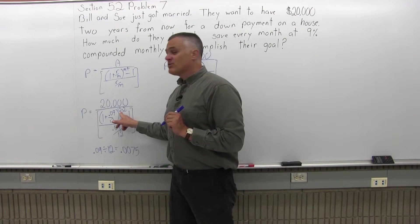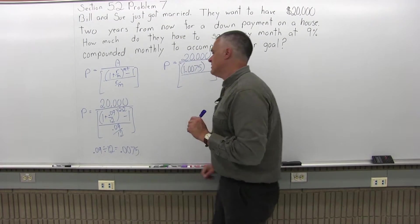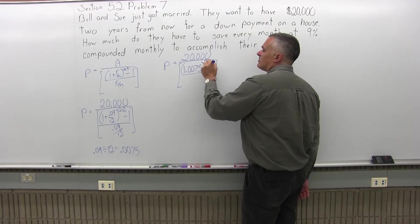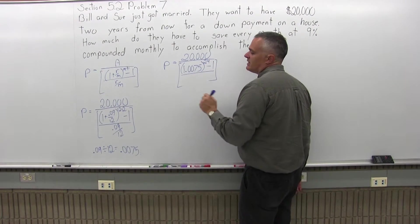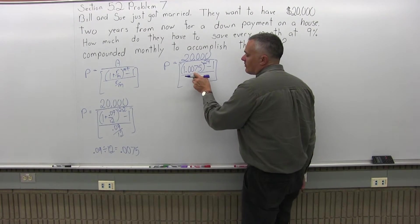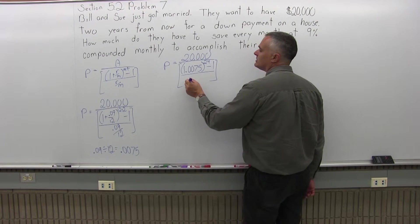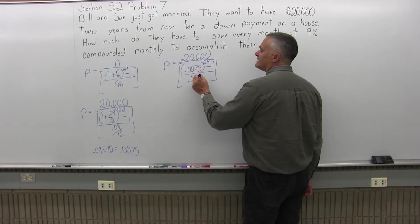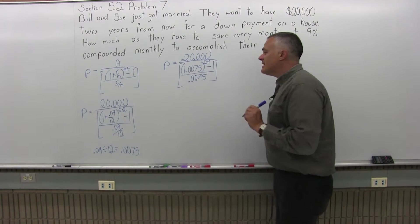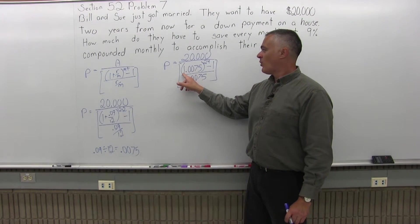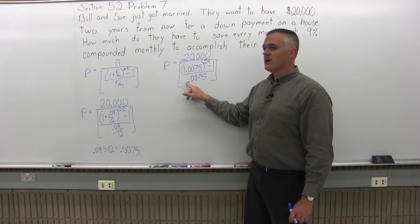And the exponent is 12 times 2. 12 times 2 is 24. And then after the parentheses, we have a minus 1. In the denominator of the brackets, that .09 over 12, which again I know is .0075. And as I like to point out, I have the same decimal in the numerator and denominator of the brackets, but in the numerator, there's a 1 in front of the decimal. In the denominator, there's none.